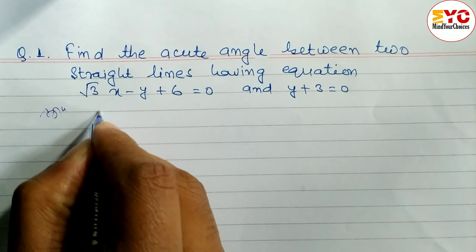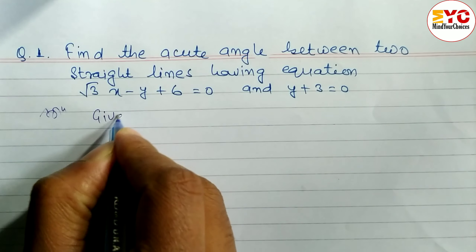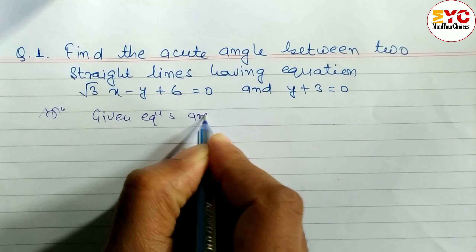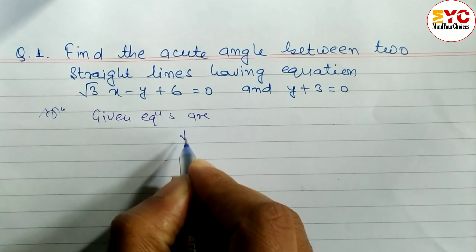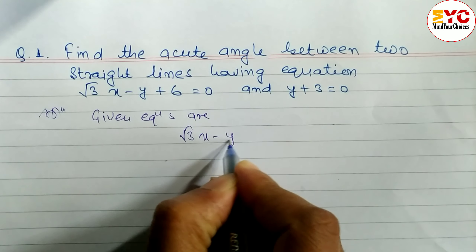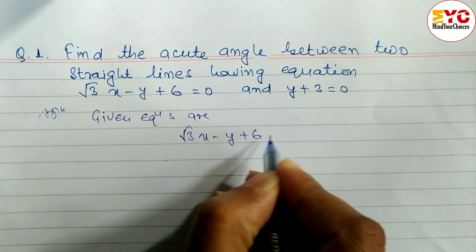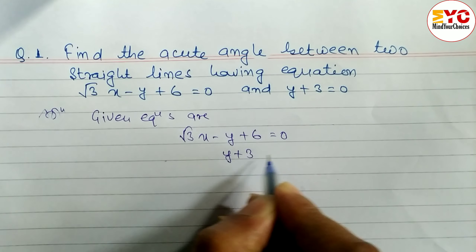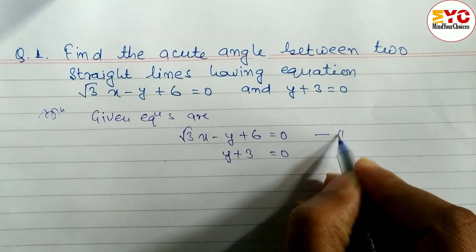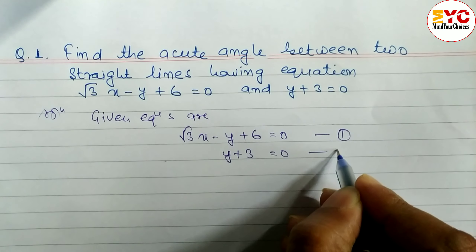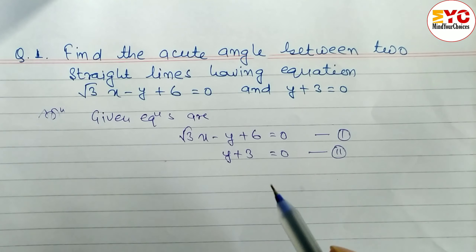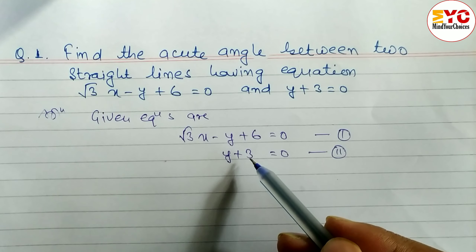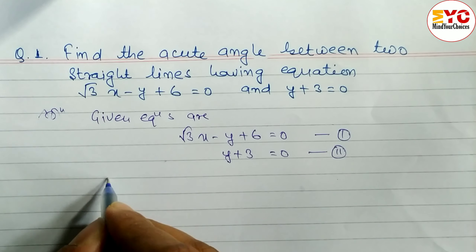Solution: the two equations given here are root 3x minus y plus 6 is equal to 0 — let's call this equation 1 — and y plus 3 is equal to 0 — equation 2. First of all we have to find out the slope of equation 1 and then the slope of equation 2.